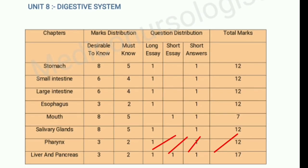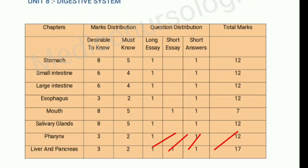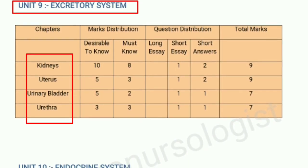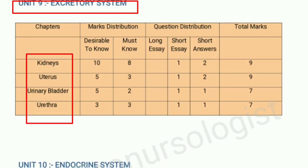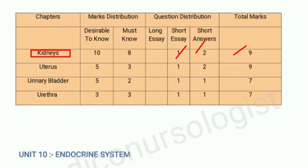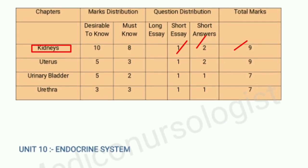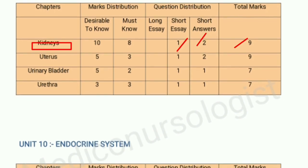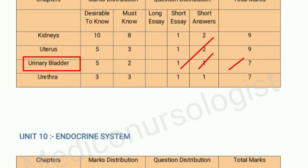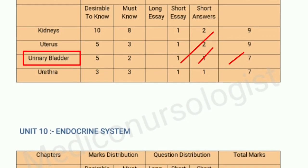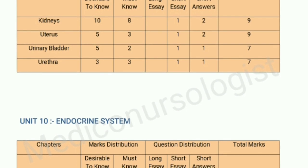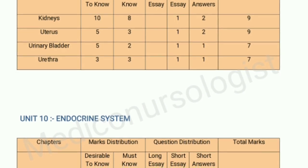Our next unit is the excretory system, which has four chapters: kidneys, ureter, urinary bladder, and urethra. The kidney chapter carries 9 marks — 1 question for 5 marks and 2 questions for 2 marks each. The ureter carries the same marks distribution. The urinary bladder carries 7 marks with 1 question for 5 marks and 1 question for 2 marks, and the urethra also carries the same marks distribution as the urinary bladder.